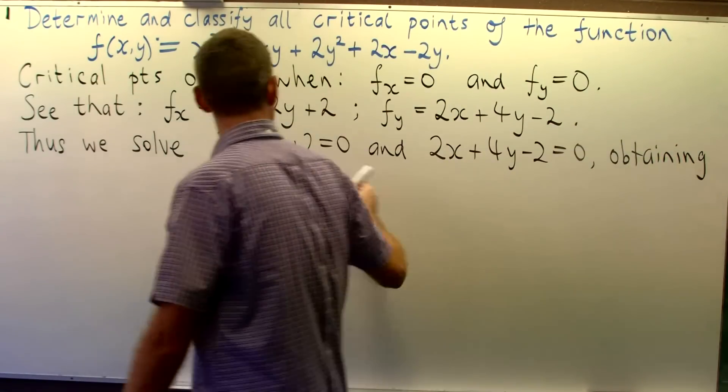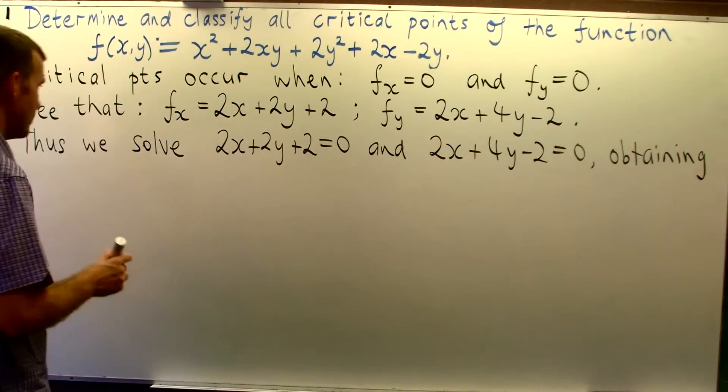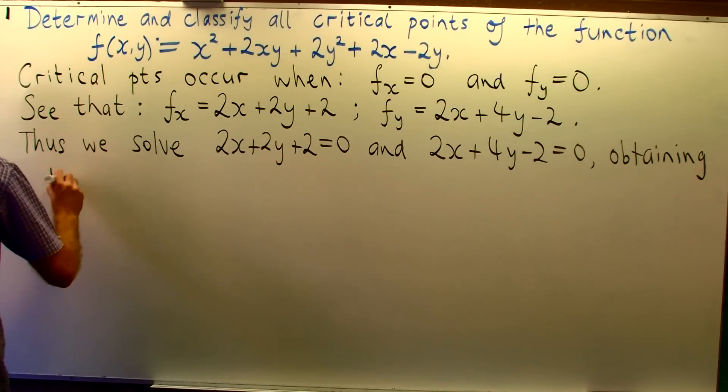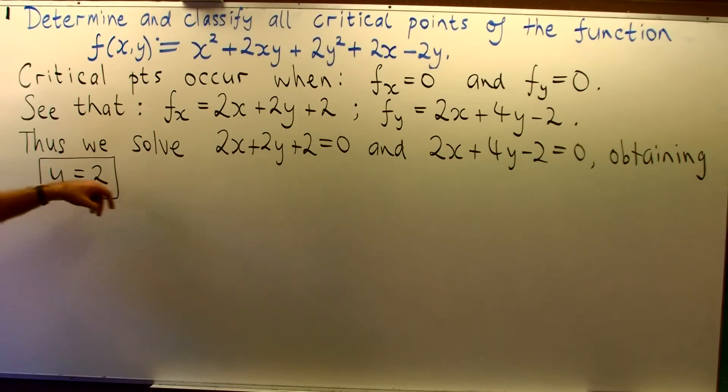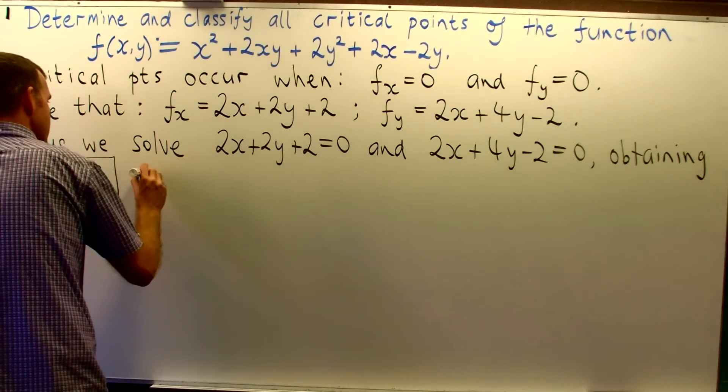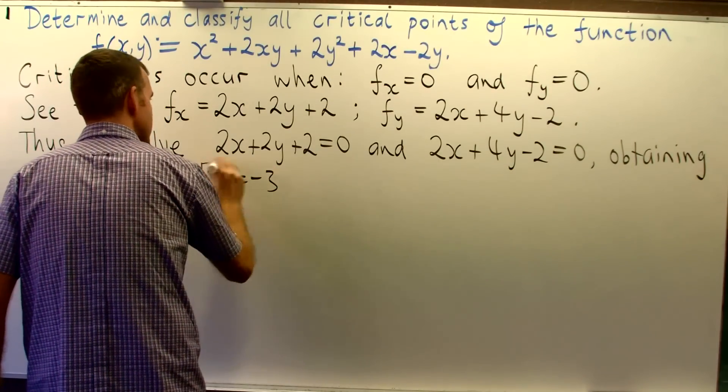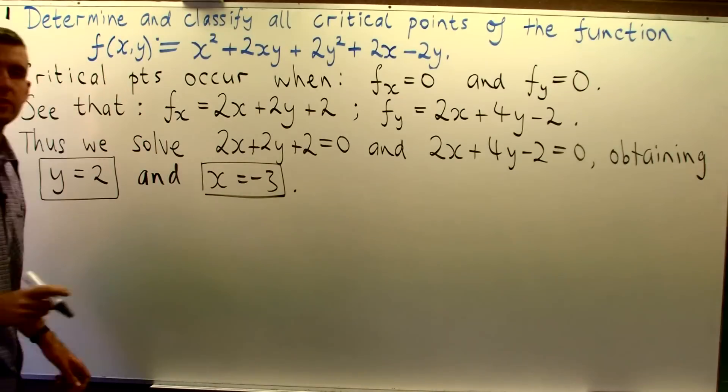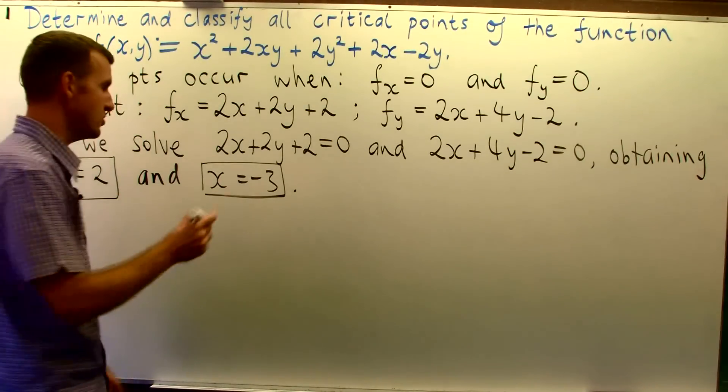We can take the first equation away from the second equation and that way we eliminate the two x's. Okay, so the first equation away from the second one gives us something like 2y minus 4 equals zero. So y equals 2.